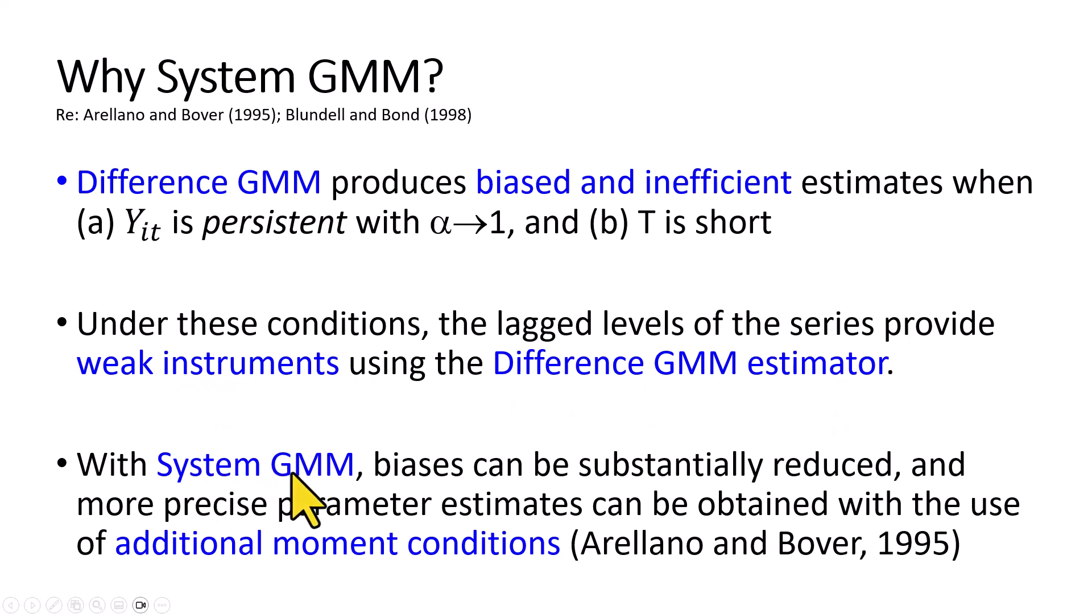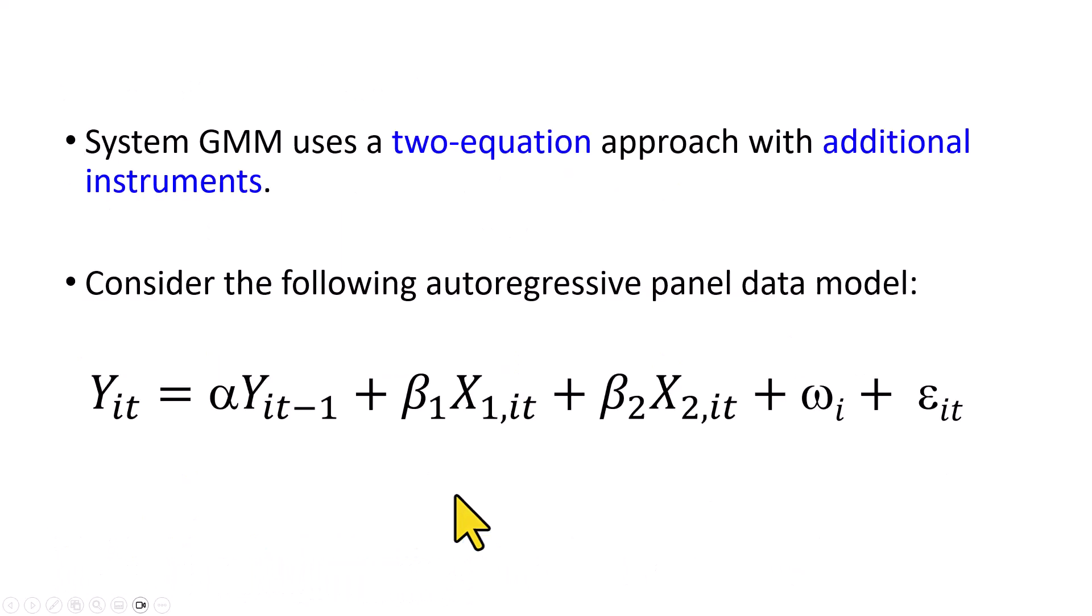With system GMM though, these biases can be substantially reduced and more precise parameter estimates obtained with the use of additional moment conditions, which are the additional instruments. So pursuant to this, system GMM uses a two-equation approach with additional instruments.